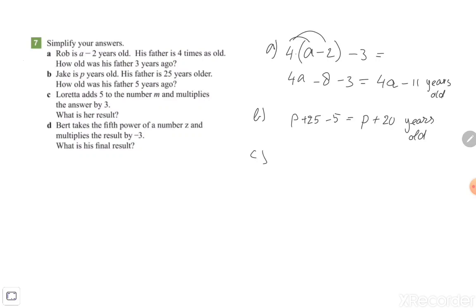In exercise c, Bert adds 5 to a number m, so just a random number. They just talked about the number m. So we start with the letter m and add 5, so m plus 5. And then later we need to multiply that answer by 3, so the whole m plus 5 multiplied by 3.